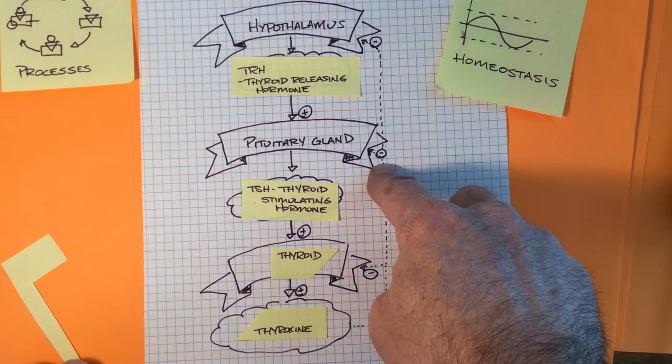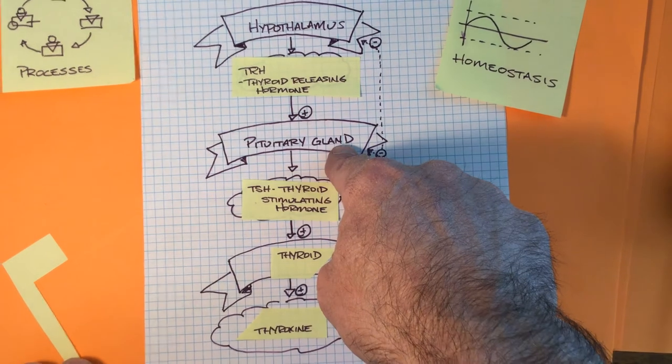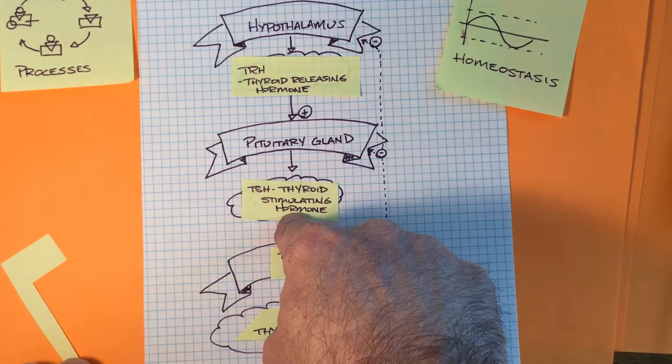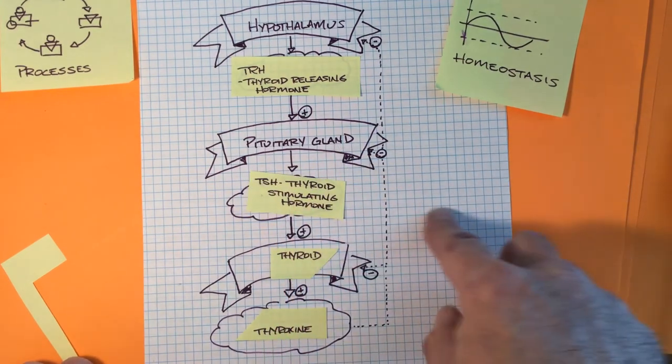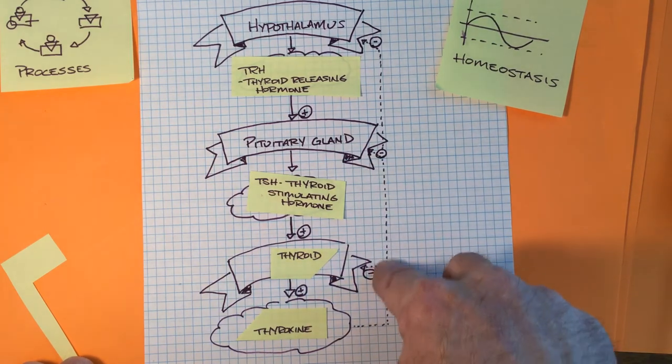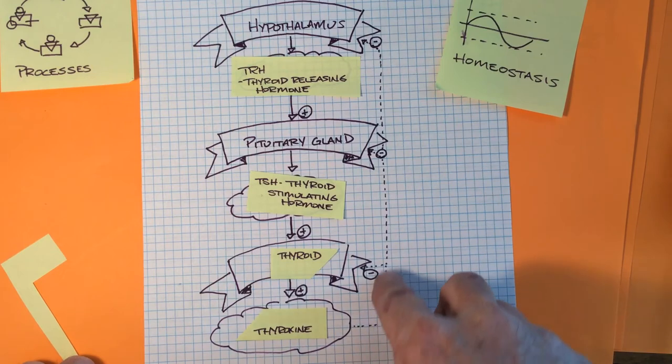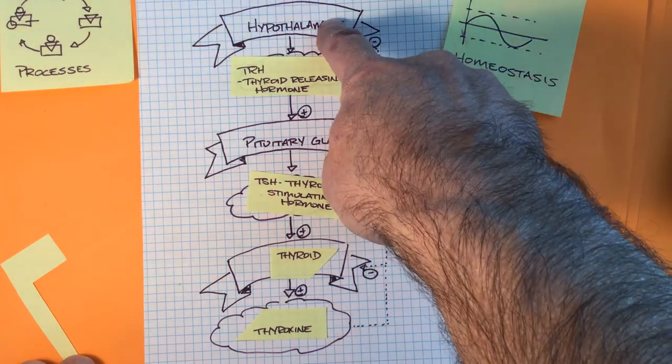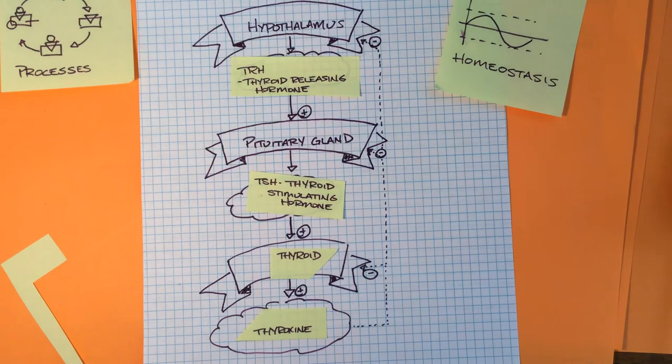The presence of thyroxin in the bloodstream also feeds back and tells the pituitary gland to stop producing TSH. It inhibits it. That's this little negative sign. And then also, the presence of thyroxin inhibits the hypothalamus from releasing TRH.